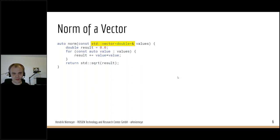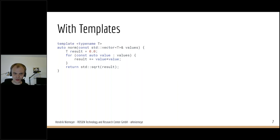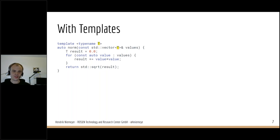Of course there are more numerical data types than just doubles, and there are more containers than just vectors, so this is way too specific code. In C++, the answer to going from specific code to generic code is usually templates. So the first thing we could change is keep std::vector but make it a vector of T and allow arbitrary types. This is a little better — now we can put floats or ints in there.